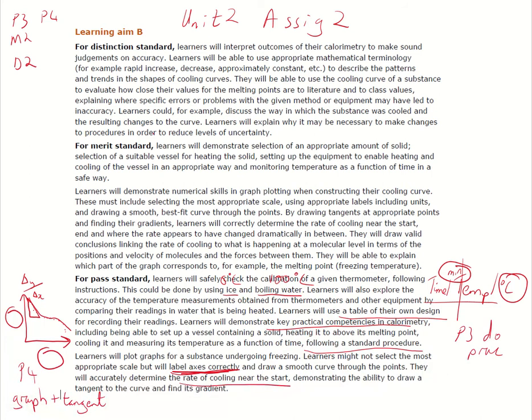Now the merit bit for M2, demonstrate an appropriate amount of solid. So generally just when you've got your tube you should have enough solid in that you can actually see it within there.